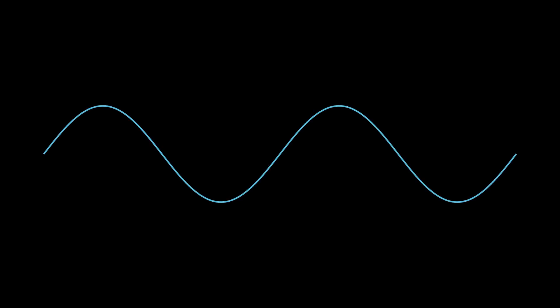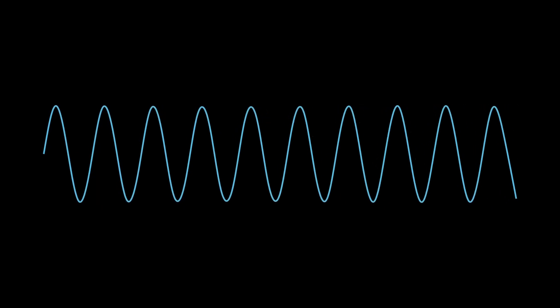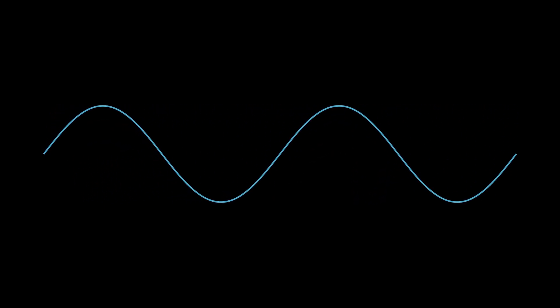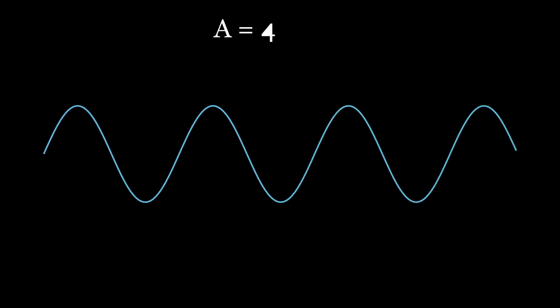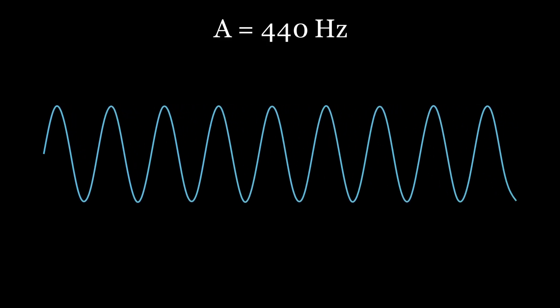Each musical note has a different frequency. The range of frequencies audible to the human ear is approximately 20 to 20,000 Hz, known as the audio frequency range. Let's take the note A as an example. Note A has a frequency of 440 Hz. If we supply electricity at that frequency to the motor, the motor will produce the sound of note A.